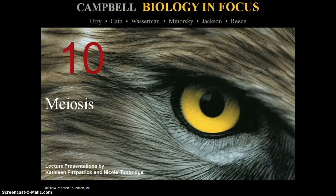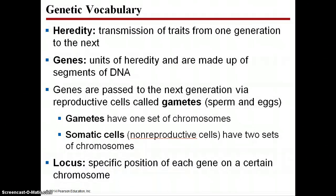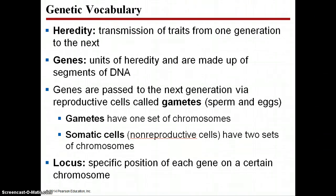Hi ladies. Today we're going to be going through the process of meiosis. A couple of genetic vocabulary terms you need to be comfortable with. Number one is heredity — this is just the transmission of traits from one generation to the next. Meiosis basically sets up organisms to be able to transmit their traits from one generation, so they need to produce the proper cells in order to do this. Genes are the units of heredity — different segments of DNA. We're going to be referring to genes throughout this screencast.